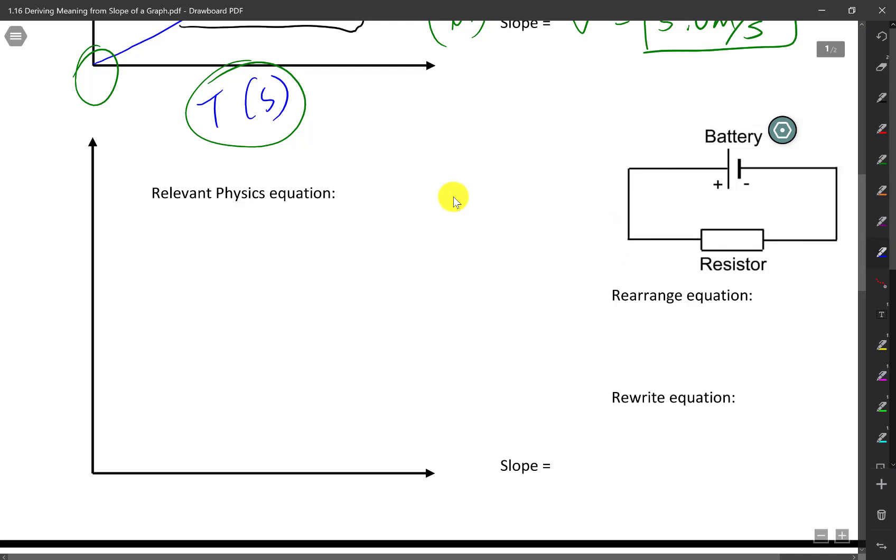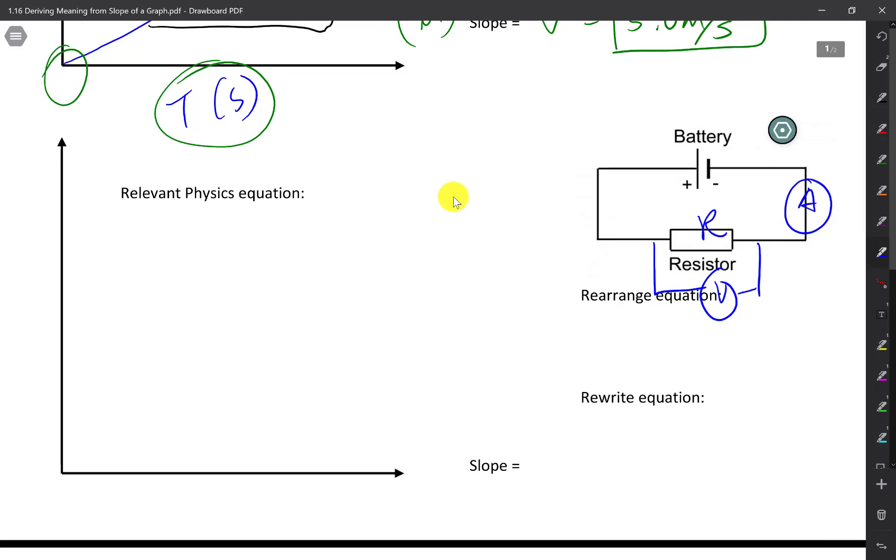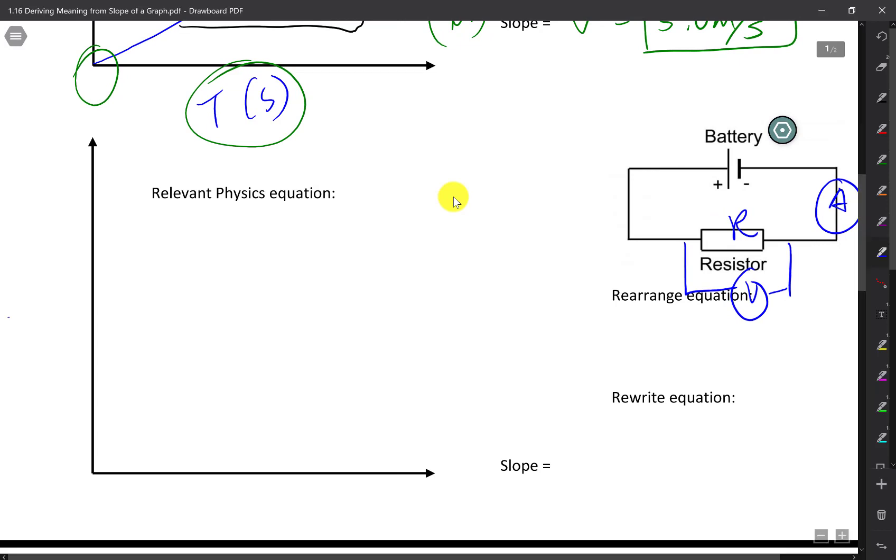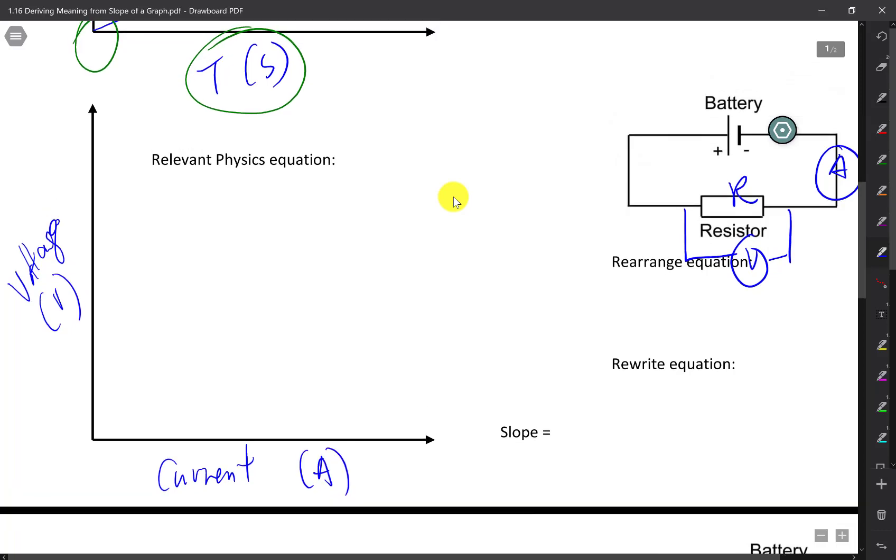Next example, say you are measuring the voltage and the current going across the resistor. So let's say you have an ammeter attached to the circuit, attached to a battery, and you have a voltmeter across your resistor of resistance R. And you want to see the relationship between the voltage and the current. But let's say that I graphed voltage on my y-axis and I graphed current in my x-axis measured in A, amps, voltage measured in volts, V. And what I found was I found some sort of linear relationship between the two, and there's my graph.